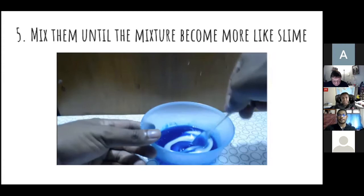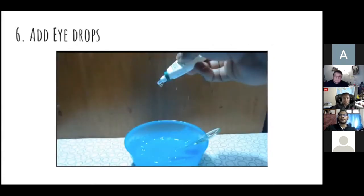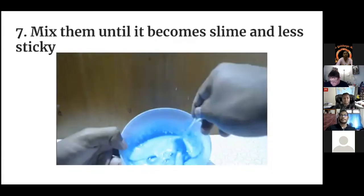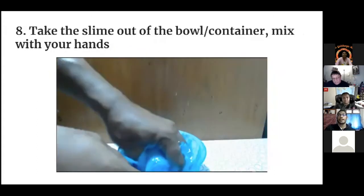Mix them well until the mixture becomes more like a slime. In this step we need to put the soap little by little and then mix it again, and do it over and over again until it is thick enough. After the mixture is thick enough, we can add hydros. It is similar to when we add soap - add it little by little and mix it until we get the texture of slime. Mix them until it becomes slime and the texture becomes less sticky.